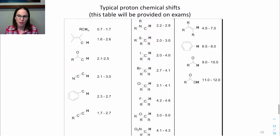So this is a table of typical proton chemical shifts. This table will be available to you on exams, but I do recommend that you memorize certain parts or certain different types of chemical shifts. For example, it's a good idea to memorize that a proton on a carbon next to a carbonyl group comes around 2 to 2.5 ppm.